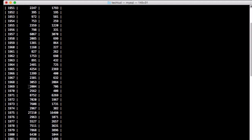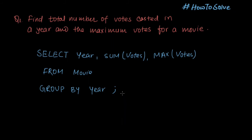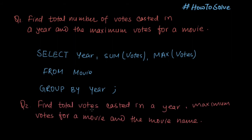Now let's do an improvement on the query. Along with the maximum votes and the total number of votes casted in a year, we also want to list the movie name for which the maximum vote was casted. So the query will be: find total votes casted in a year, maximum votes for a movie, and the movie name for which this maximum vote was casted.